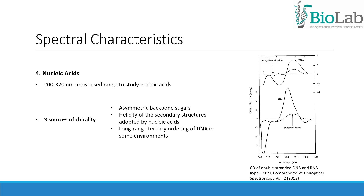In nucleic acids, there are three sources of chirality. First is the asymmetric sugar, especially position C1, which causes monomeric nucleosides to exhibit CD. The second source is the helicity of the secondary structures adopted by nucleic acids, and the third source of CD results from long-range tertiary ordering of DNA in some environments. Conventional CD spectroscopy operates within the spectral range of about 200 to 320 nm and provides important information about conformational properties of DNA, including the B family of structures, A form, Z form, guanine quadruplexes, cytosine quadruplexes, triplexes and other less characterized structures.